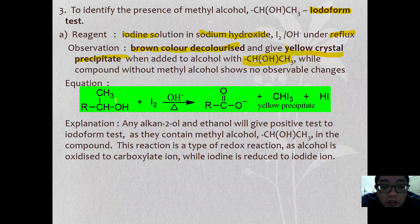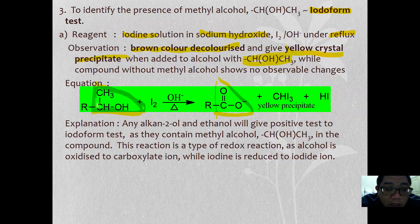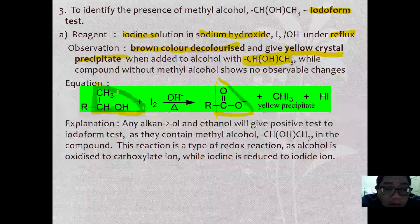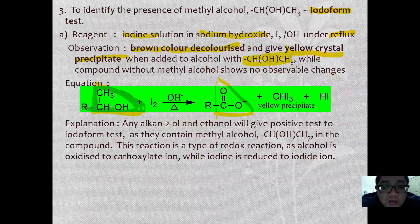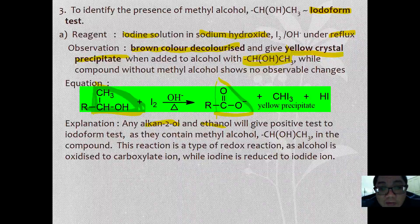The general equation can be given as: R-CH(OH)-CH3 reacted with iodine and alkaline forms RCOO⁻. This structure I like to call the 'golden triangle,' which is important for a positive test. Any secondary alcohol with this arrangement will give a positive test. Ethanol can also give a positive Iodoform test because it has the presence of a methyl alcohol group.